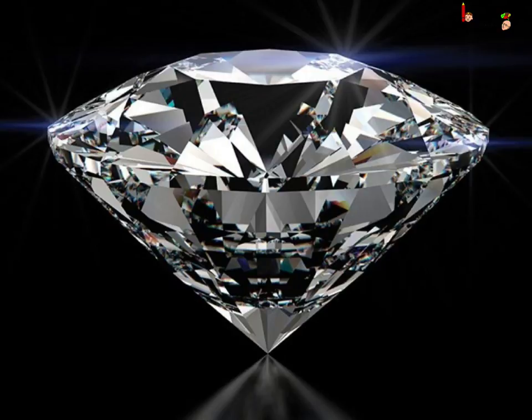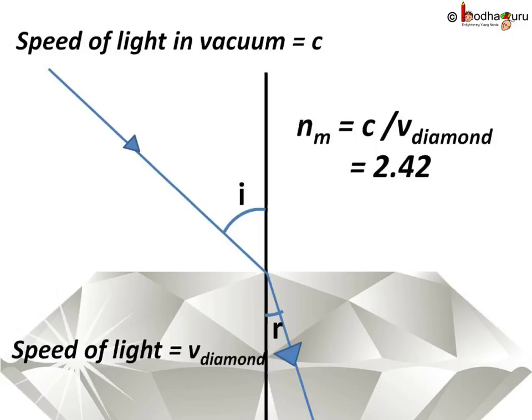The refractive index of diamond is 2.42, meaning speed of light through vacuum divided by speed of light through diamond equals 2.42 — so light slows down by a factor of 2.42 compared to light in vacuum. This drastic change of speed makes the light bend more towards the normal as it enters the diamond from a less dense medium, such as air.